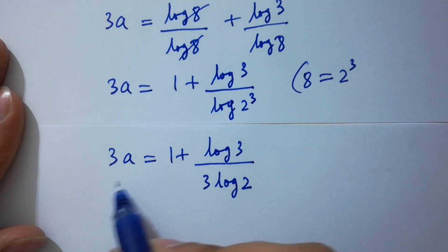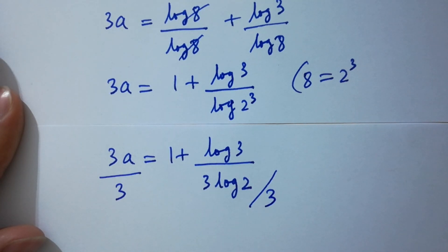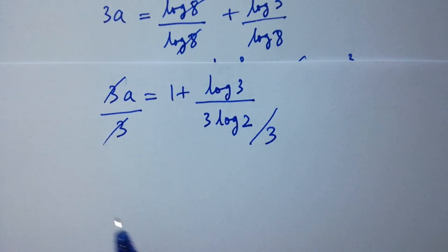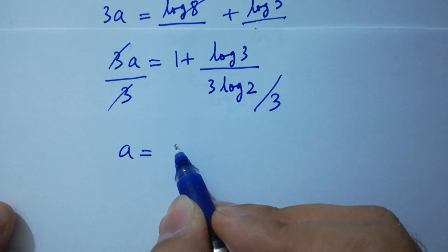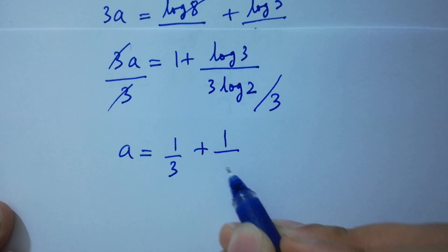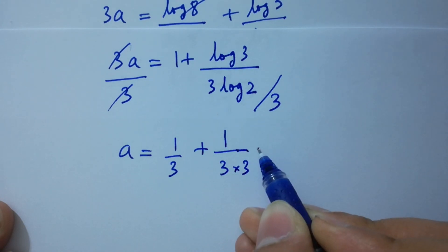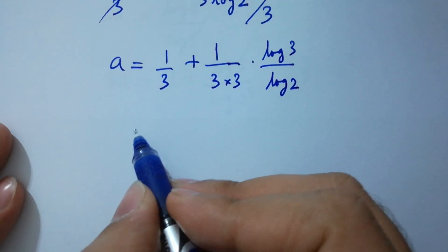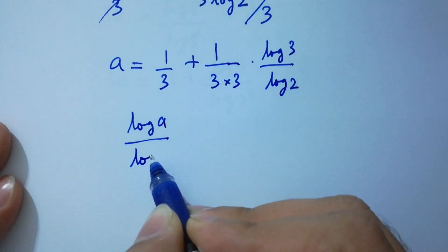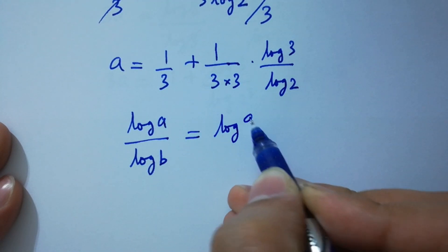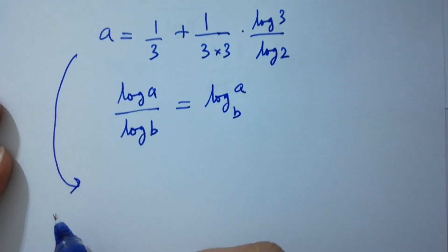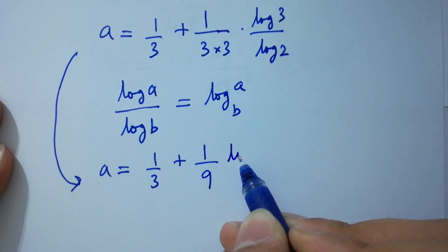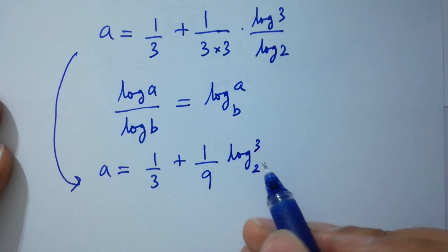In the next step, divide both sides by 3. The 3s cancel, giving a equals 1 over 3 plus 1 over 3 times log 3 over 3 log 2. Since 3 times 3 is 9, and using the change of base rule log a over log b equals log a to the base b, a equals 1 over 3 plus 1 over 9 times log 3 to the base 2, which is the value of a.